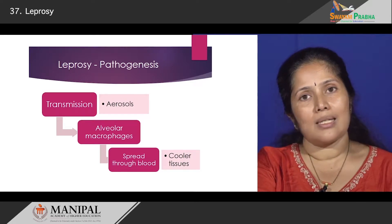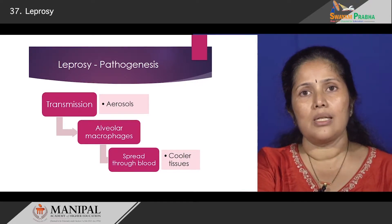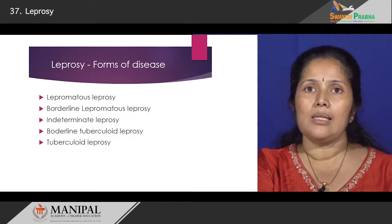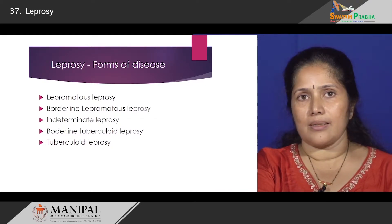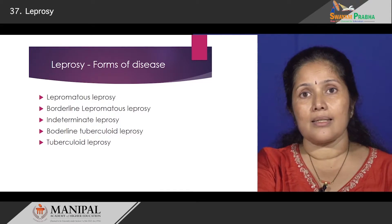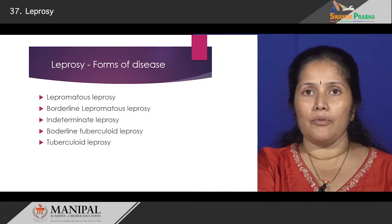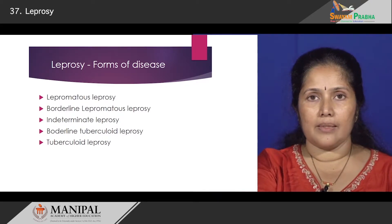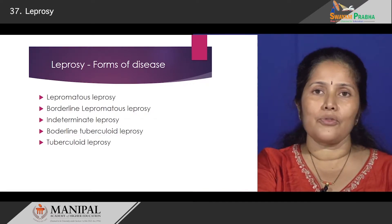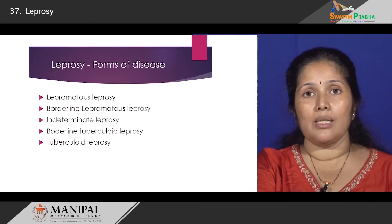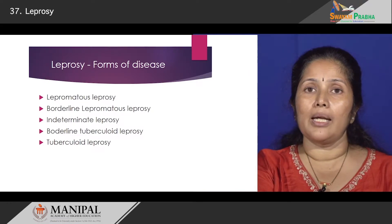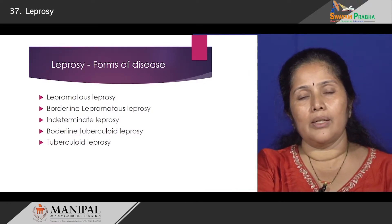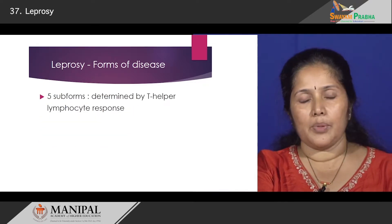As we go along you will see that patients develop a lot of lesions in relation to the skin and nerves. Now let us look at the different forms of disease. There are five important categories. Looking at the disease spectrum, you have lepromatous leprosy at one end, while at the other end you have tuberculoid leprosy. In between you have borderline lepromatous, indeterminate leprosy, and borderline tuberculoid leprosy.